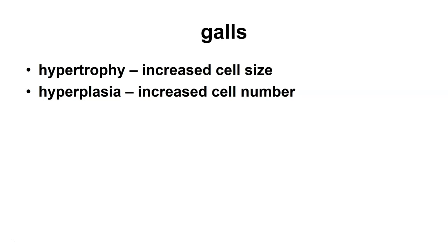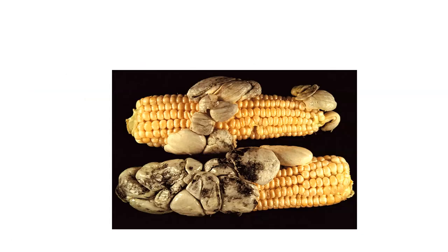Another type of symptomology we get are galls. We have two words to understand: hypertrophy, which means an increase in cell size, and hyperplasia, which means an increase in cell number. Either one will give an increase in size; have both and you've got a real problem. When looking at galls, we're looking at increased cell size and increased cell number — either way this gives us an amorphous mass found on a plant.